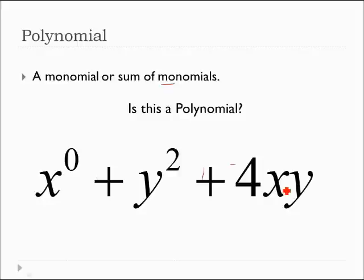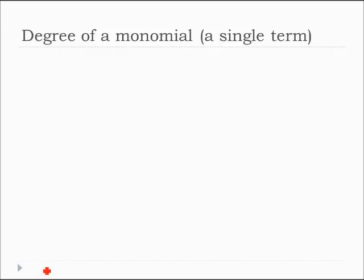How about this one? Yes, it's a polynomial. There are variables. They have whole number exponents. Yes, 0 is a whole number, and so this is a sum of monomials. That's perfectly fine.